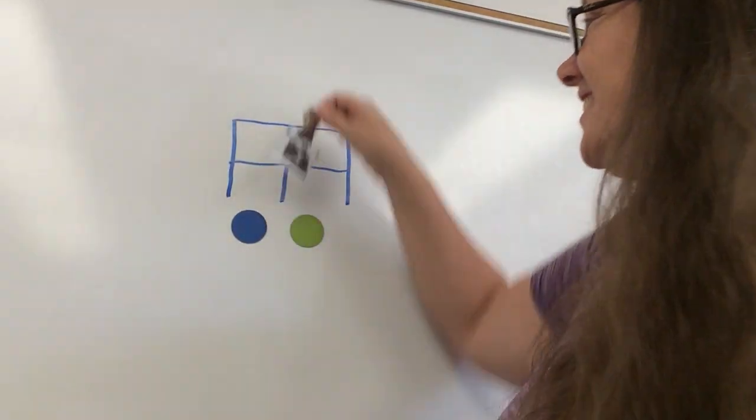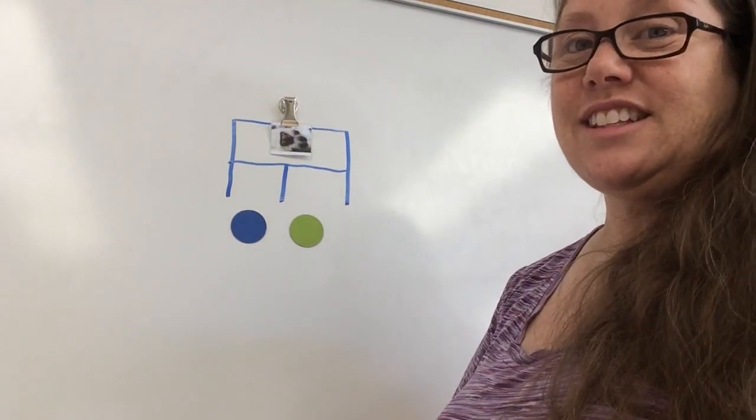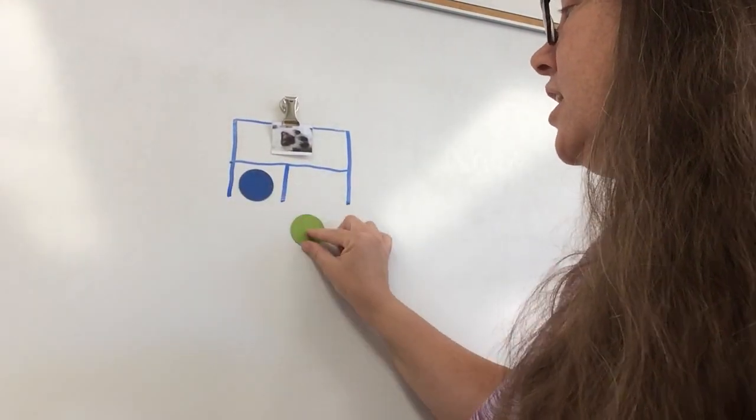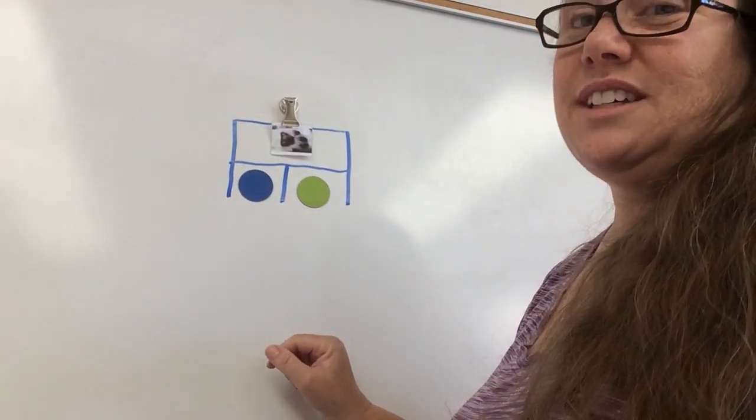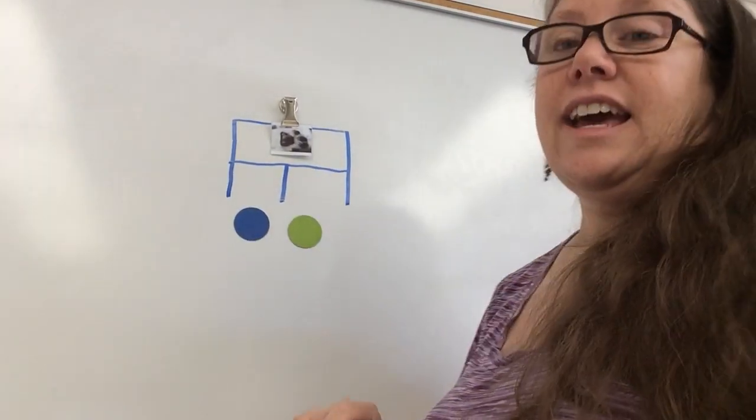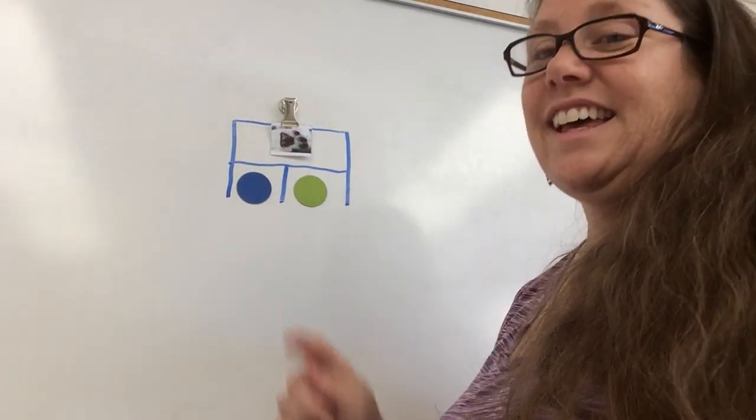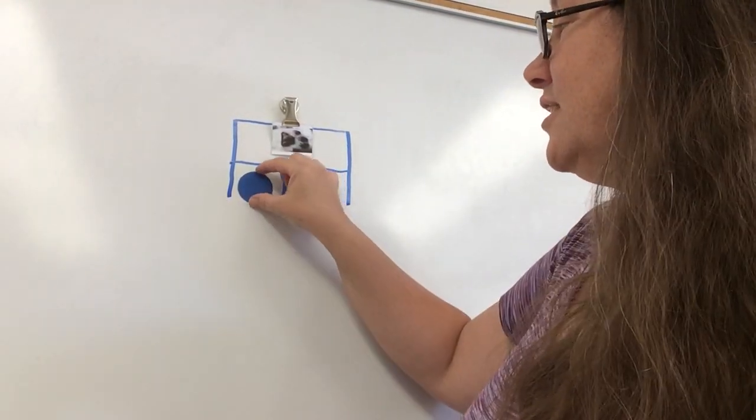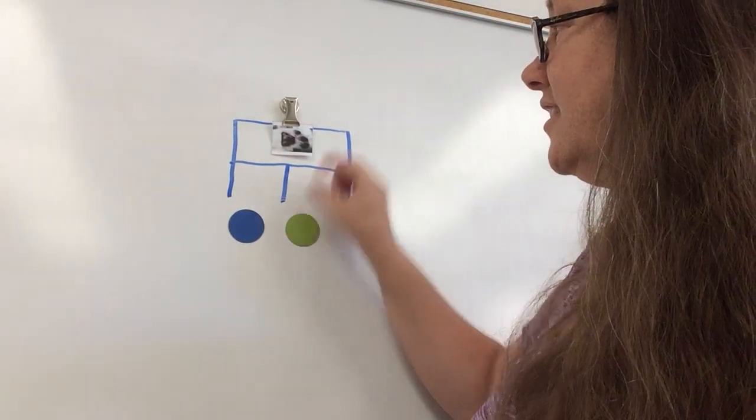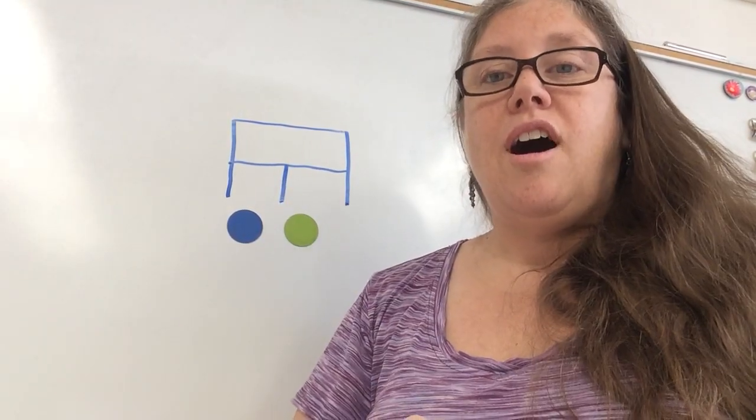And our last one is paw. Okay, here we go. Let's do it together. P-AW. Now you do it. And we'll do it together. P-AW. And your turn. So the two sounds in paw are P-AW.